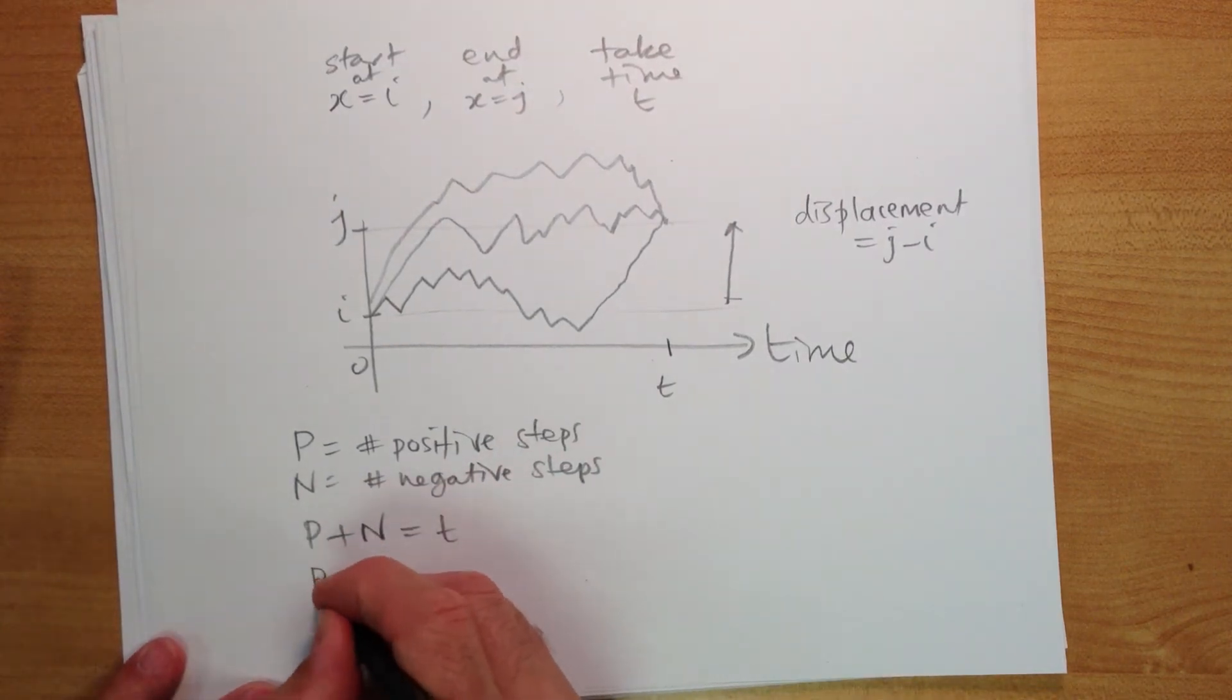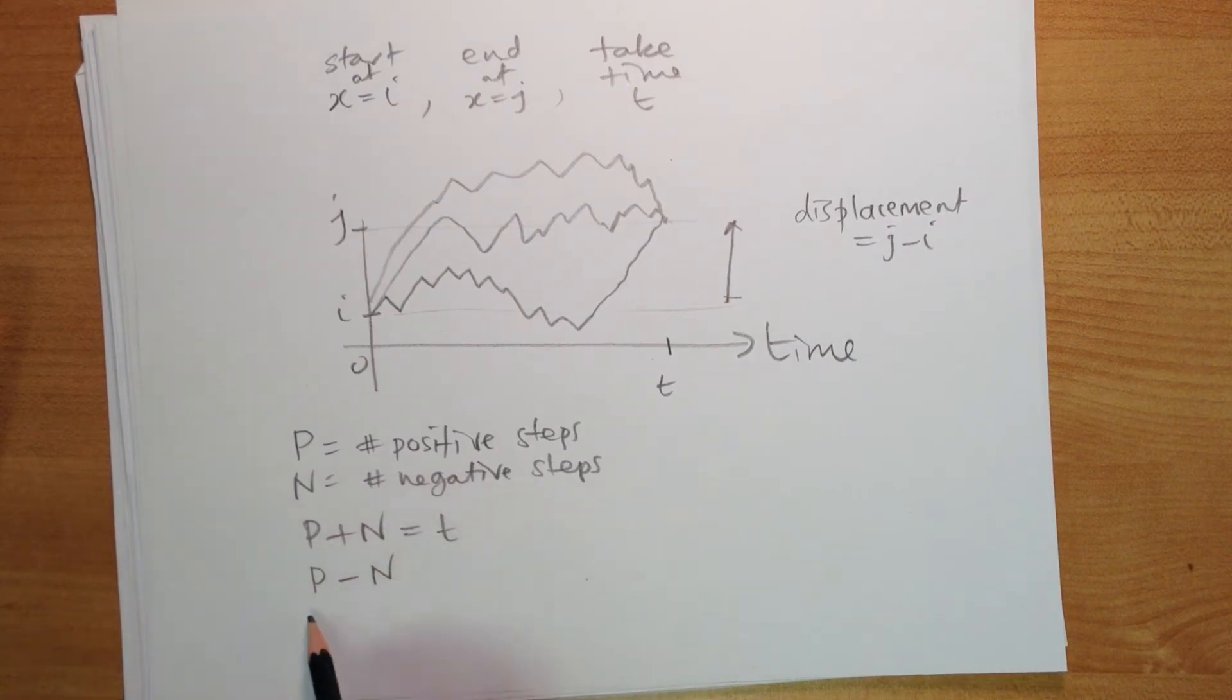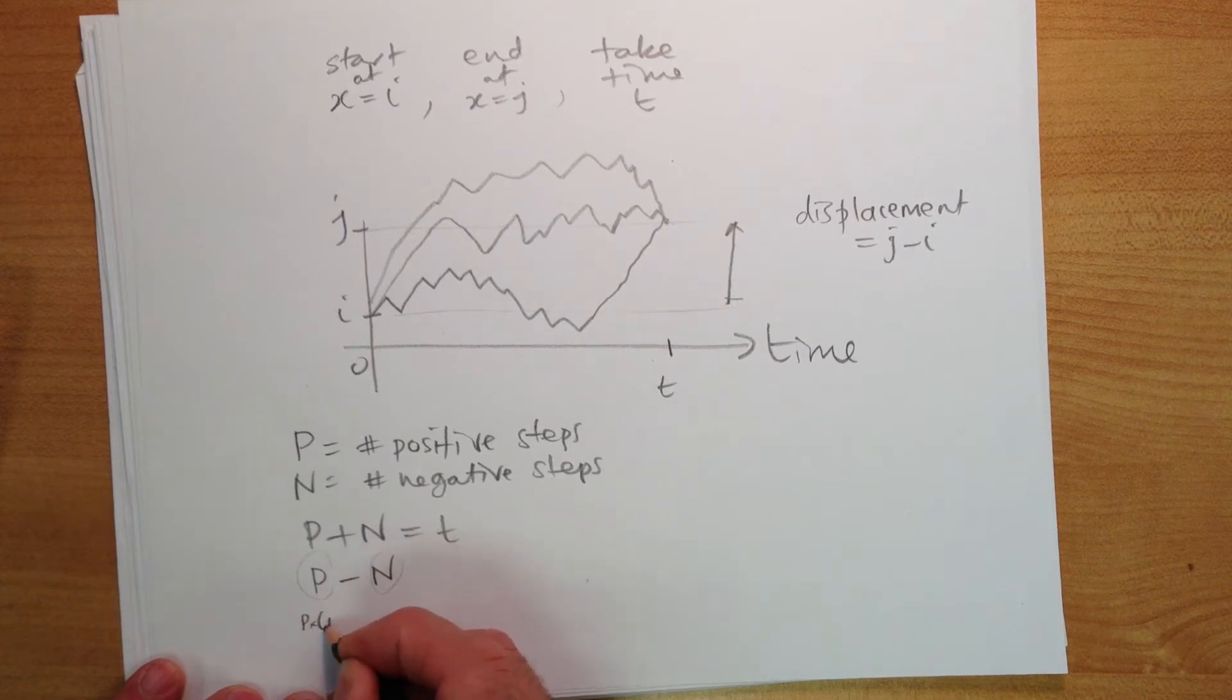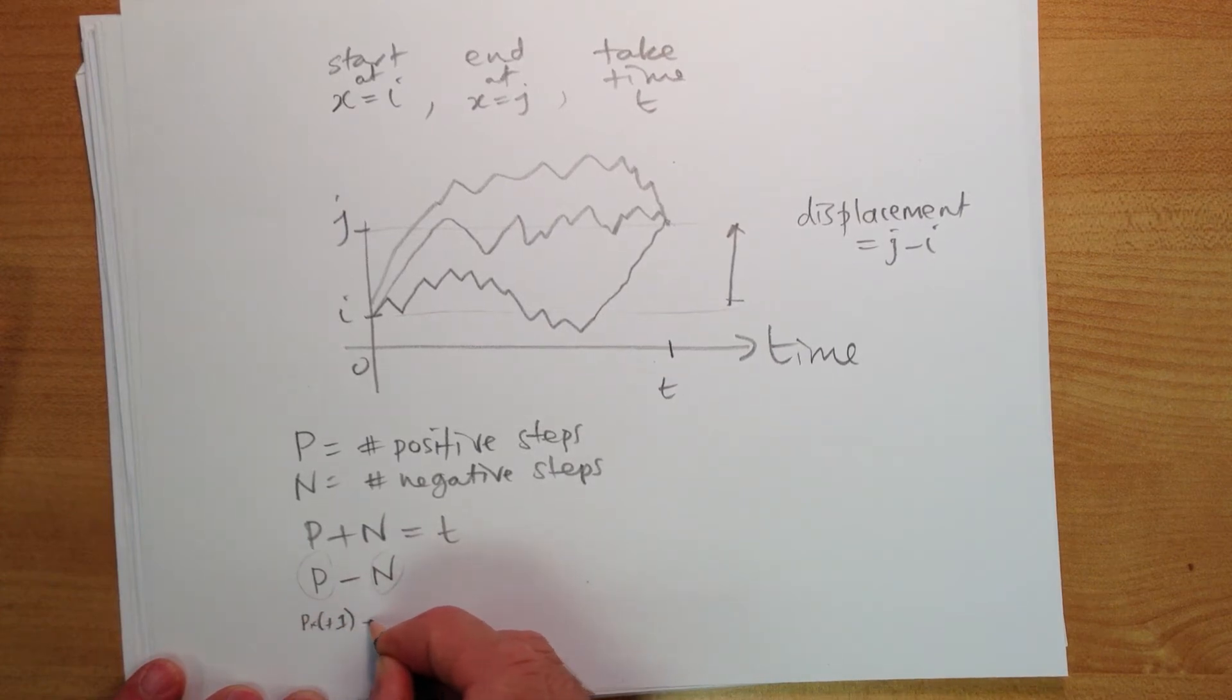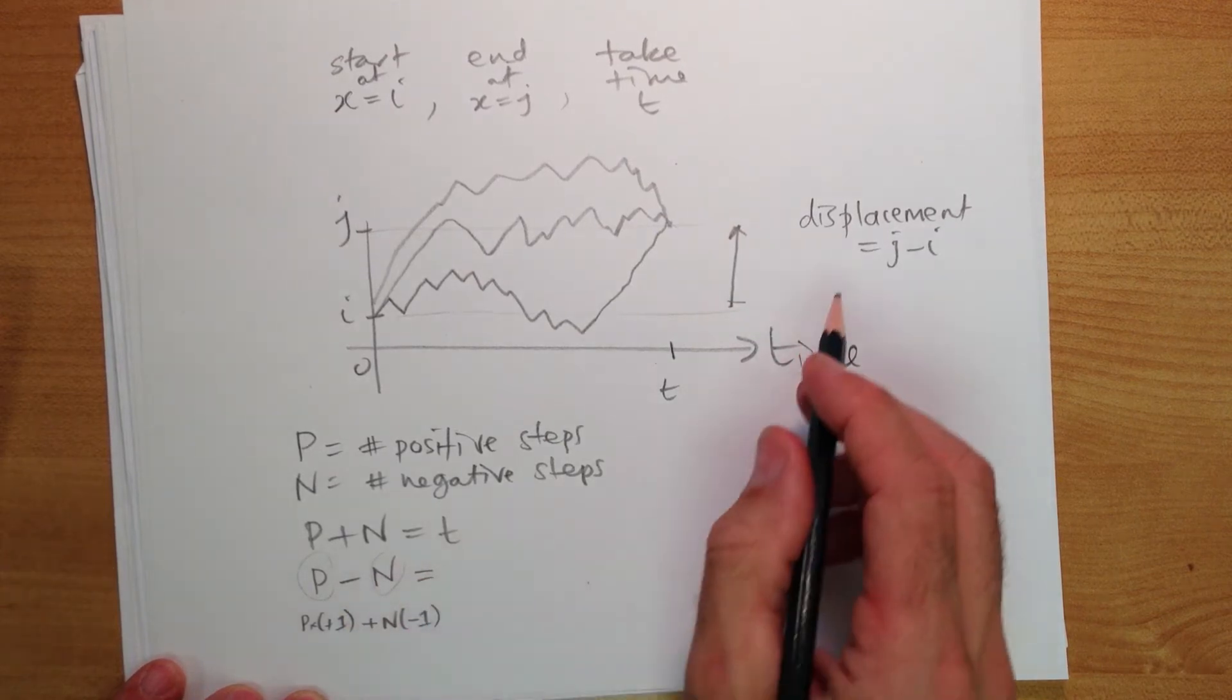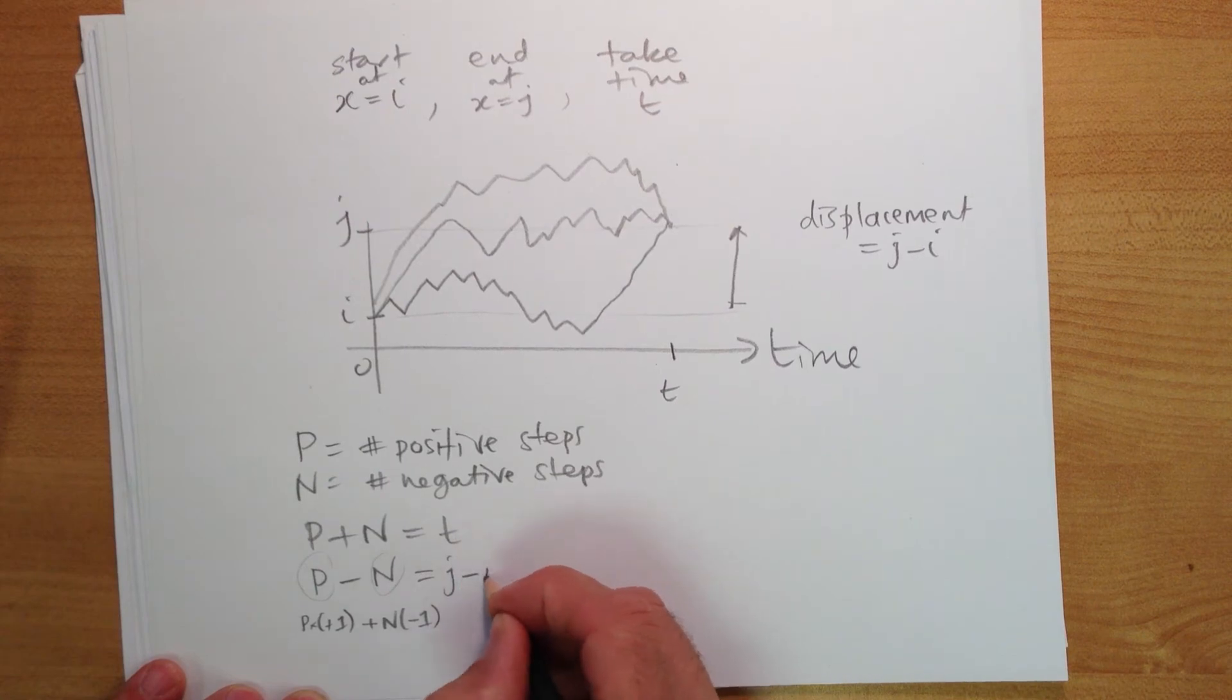And we have P minus N, the number of positive steps minus the number of negative steps, which gives you P times plus one plus N times minus one. This has to equal the displacement, j minus i.